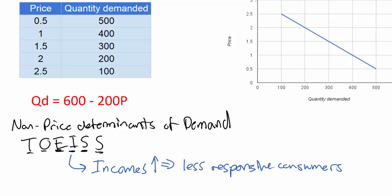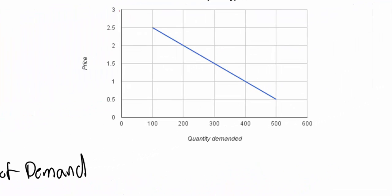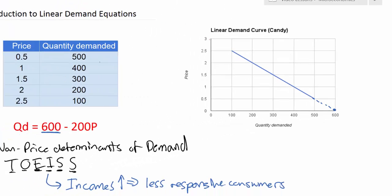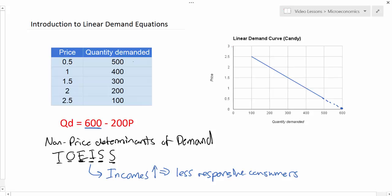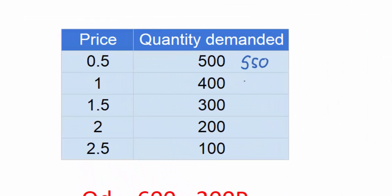How would this affect the demand curve and the demand equation for candy? The Q intercept, or the A variable, remains the same at 600. The demand curve is not going to shift in or out, but what's going to change is the B variable, causing the demand curve to pivot. At a price of 50 cents, instead of consumers demanding only 500 units of candy, they're now going to demand 550 units. The quantity demanded decreases at a slower rate now that consumers' incomes are higher.